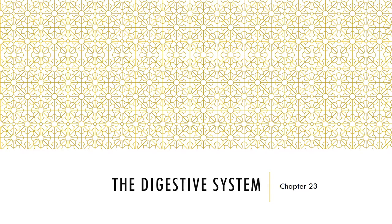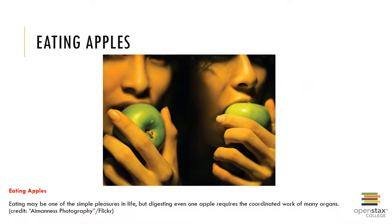In Chapter 23 we will examine the digestive system. The digestive system consists of a muscular tube called the gastrointestinal tract or GI tract and a variety of accessory organs. As you can see in the figure, eating is one of the simple pleasures in life, but digesting even a simple apple requires the coordinated work of many organs which we will examine in this unit.